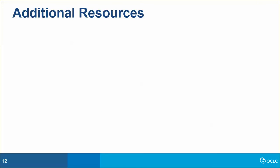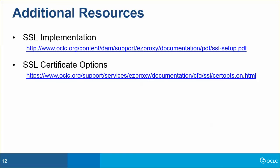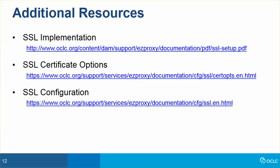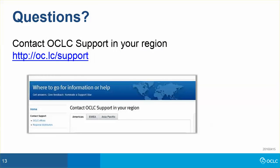For more information on SSL certificates and EasyProxy, visit these additional resources. SSL implementation provides a high-level overview of the SSL configuration process, including owners for each step and troubleshooting and best practice tips. SSL certificate options summarizes the browser warnings your users may see based on the choices made during certificate setup. SSL configuration guides you through the steps required to create an SSL certificate and activate it for use by EasyProxy. SSL certificate renewal provides instruction on how to renew an SSL certificate. If you need help or have questions about using an SSL certificate with EasyProxy, contact OCLC support in your region at http://oc.lc/support.